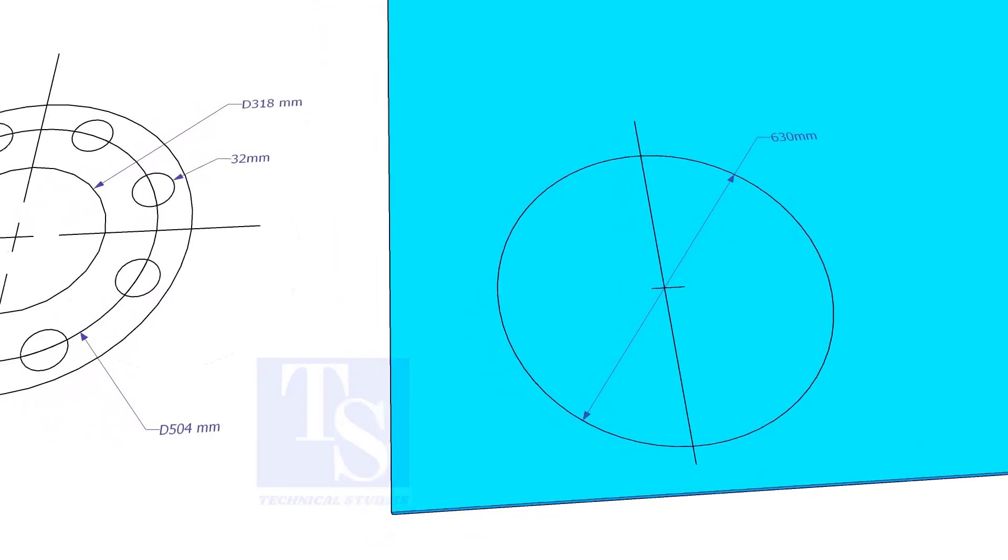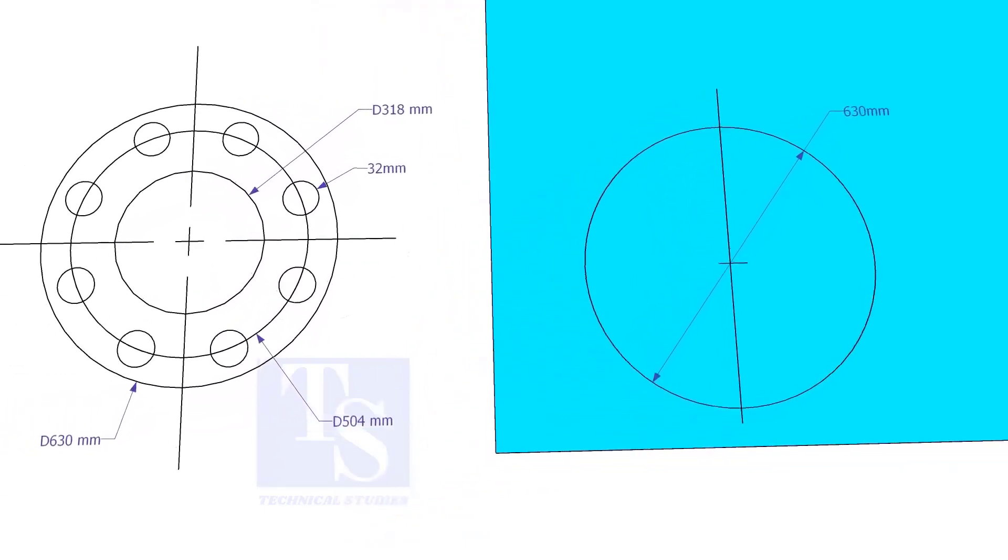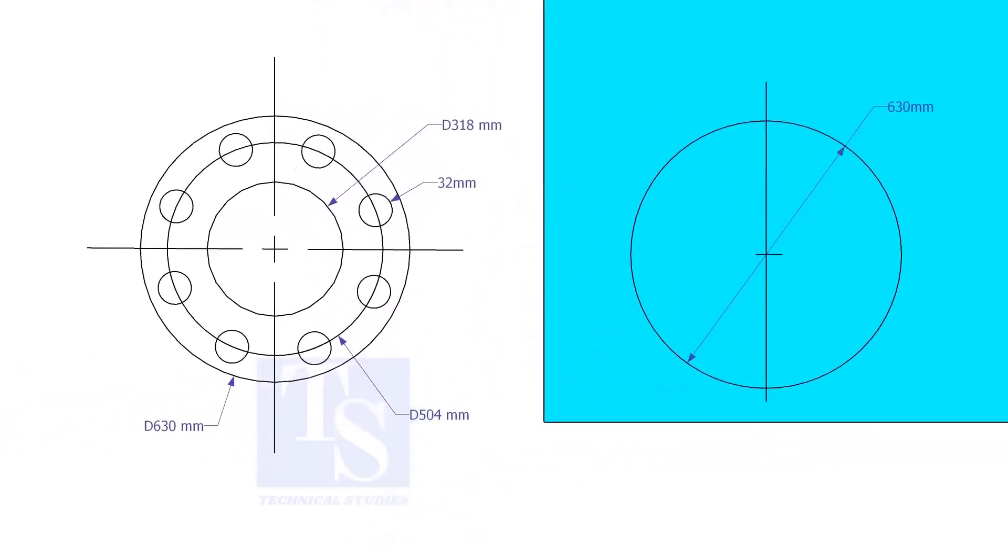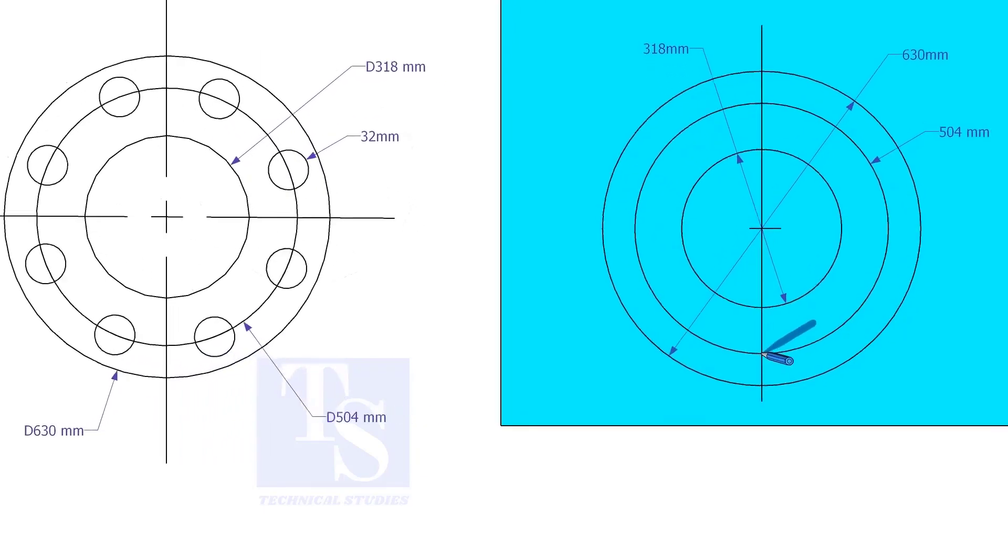Draw the OD and the ID circles. Draw the PCD. Punch mark where the PCD circle cuts the center line.